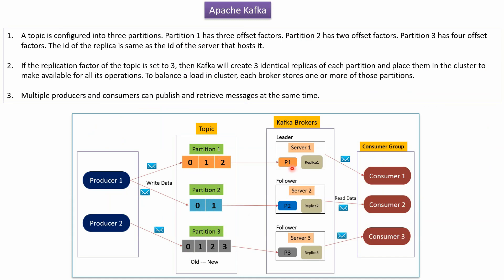Partition 1 and its replica is replica 1. Partition 2's replica is replica 2. Partition 3's replica is replica 3. The ID of each replica will be the same as the ID of its particular server. For example, if the Kafka server ID is 2, the replica ID is also 2.